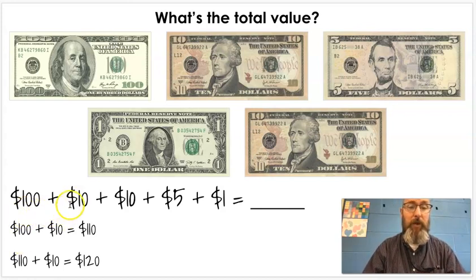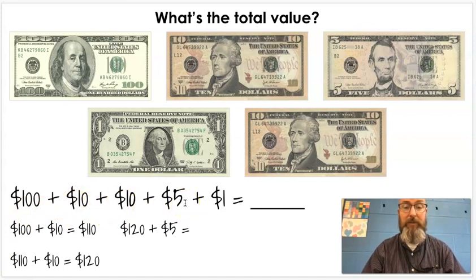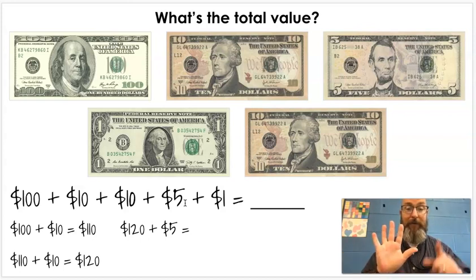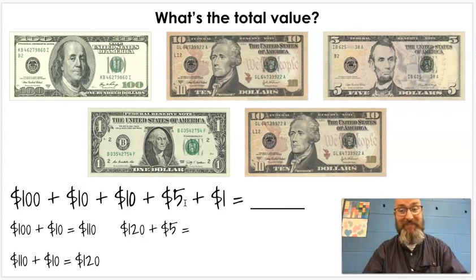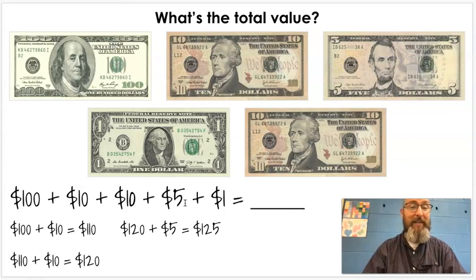We've added up our one-hundred, a ten, and a ten. Now it's time to add our five. So, $120 + $5. Again, we can use our fingers if we have to. One-hundred-twenty-one, one-hundred-twenty-two, one-hundred-twenty-three... What'd you get? One-hundred-twenty-five. That's correct.